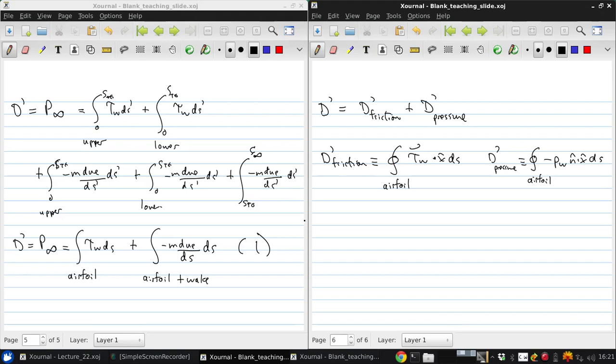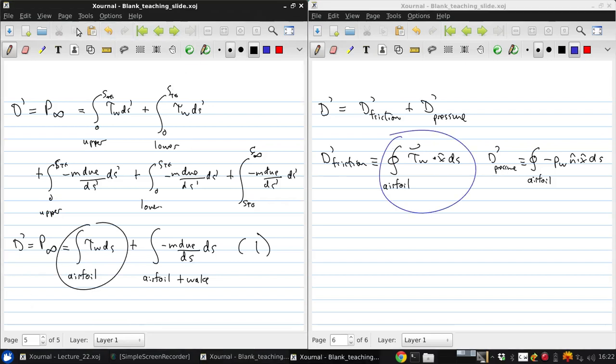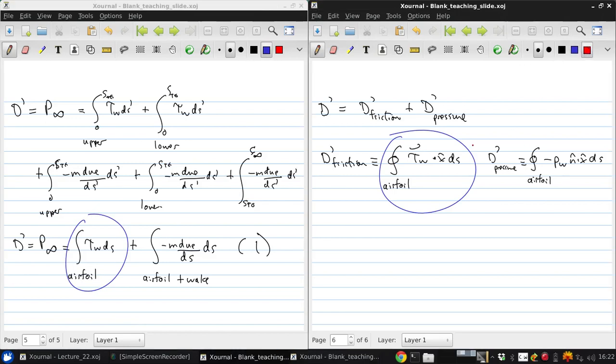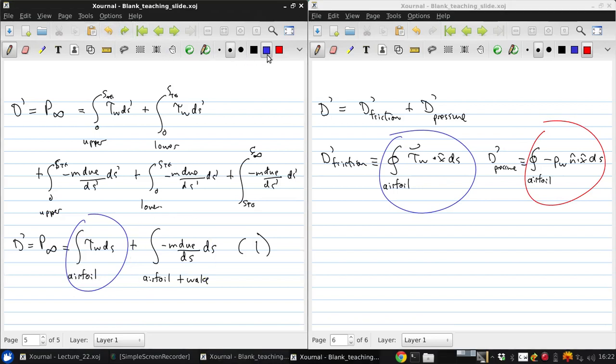So if we use the results from the integrated von Kármán equation, this equation 1, what we can then see is that this first term is actually the same in both cases, so that this term corresponds to this term, and therefore, since there's no other contribution, this term must correspond to this term.